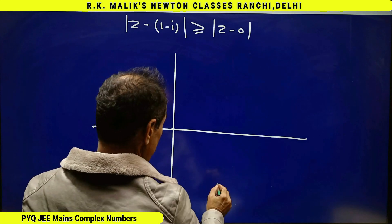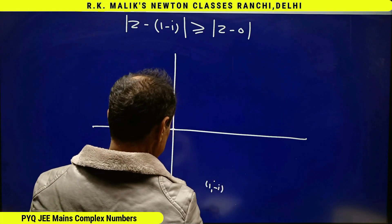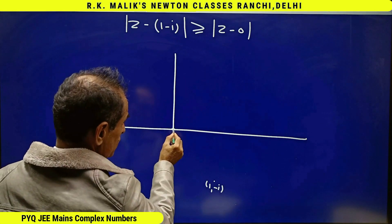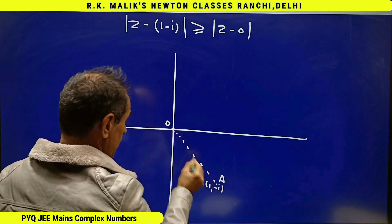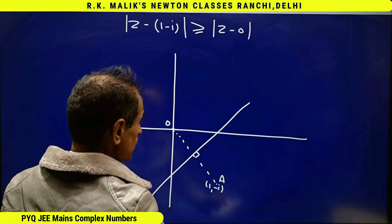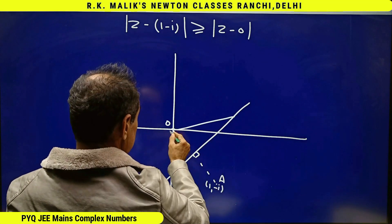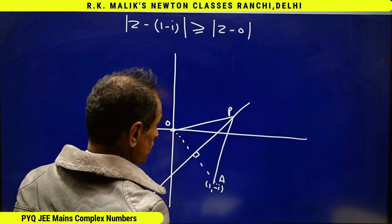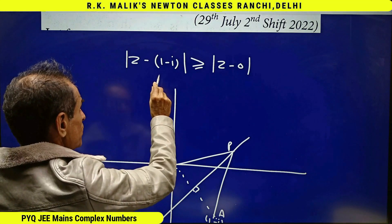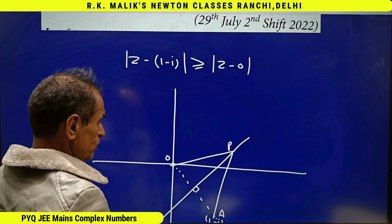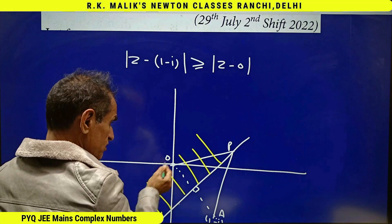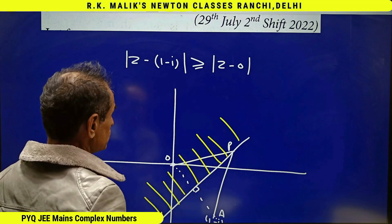0 is somewhere here and 1 minus i will be somewhere here. To find the set of complex numbers satisfying this condition, I draw the perpendicular bisector of the line joining O and A. For all points on the perpendicular bisector, the distance from O equals the distance from A. I want the complex numbers where the distance of z from (1 minus i) is greater than the distance from 0, so those complex numbers lie on this side of the perpendicular bisector.